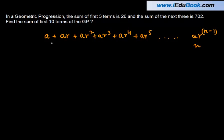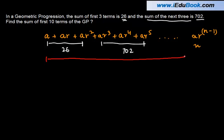Now what is given to you here is that the sum of the first three terms is 26 and the sum of the next three is 702. So the sum of these three is 702 and these three is 26. What you are required to do is find the sum of the first 10 terms.